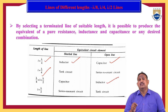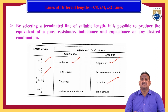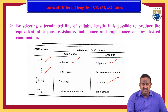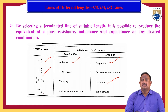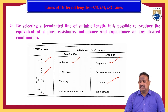If the length of the transmission line is equal to lambda by 2, and we short circuit the transmission line, it acts as a series resonant circuit; if we open circuit it, the transmission line acts as a tank circuit. So, depending upon the length of the transmission line and whether we open or short circuit it, the circuit behaves as an inductor, capacitor, tank circuit, or series resonant circuit.